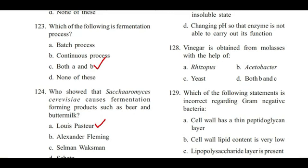Question 128: Vinegar is obtained from molasses with the help of — Rhizopus, Acetobacter, yeast, or both yeast and Acetobacter? Answer is D, both yeast and Acetobacter.